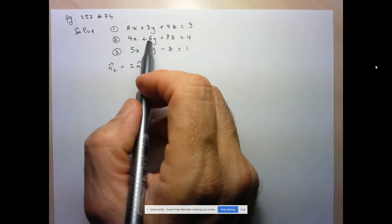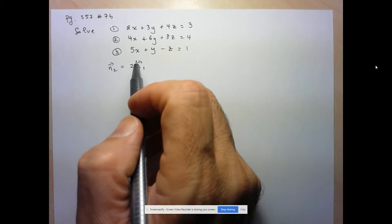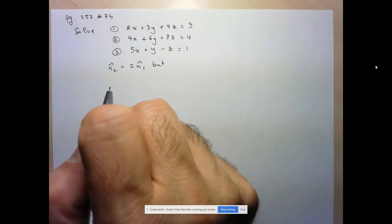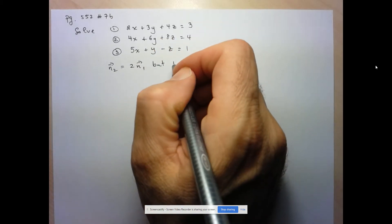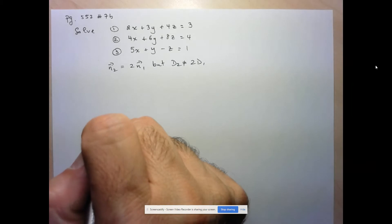2 times 2 is 4, 3 times 2 is 6, 4 times 2 is 8. However, we see that the d values do not differ by the same amount, so we have that d2 is not equal to 2d1. So what does that tell us?